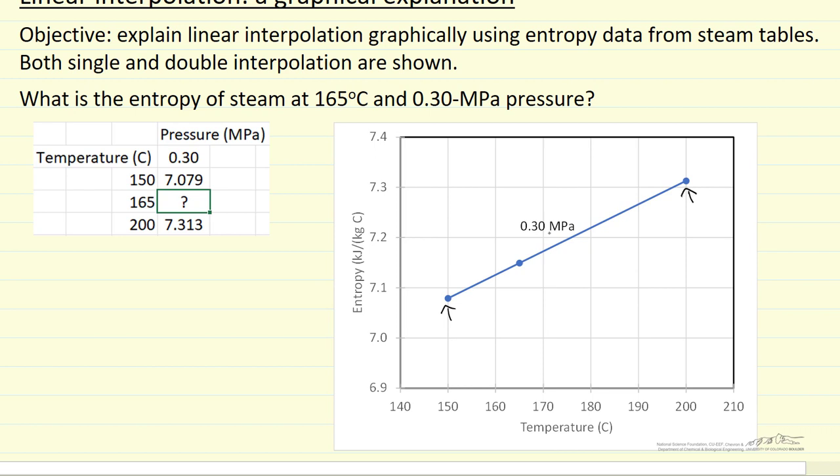Then I can read off the value of 165 here, and this is what we mean by linear interpolation, just a straight line between those two points.